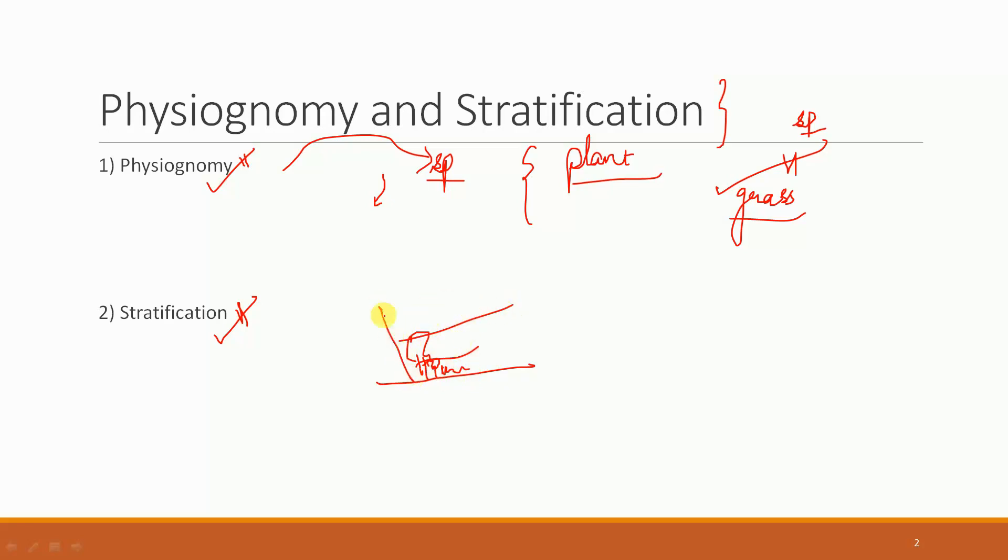So this different vertical layering that is created of plant species is what refers to stratification. The question that can be asked is, is stratification related to plant species only?